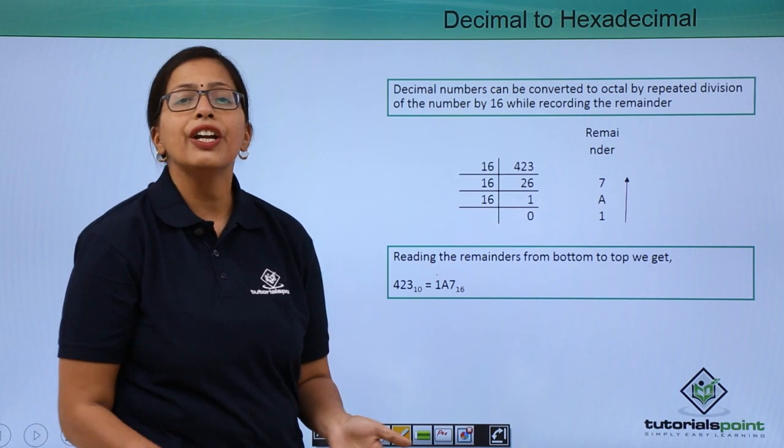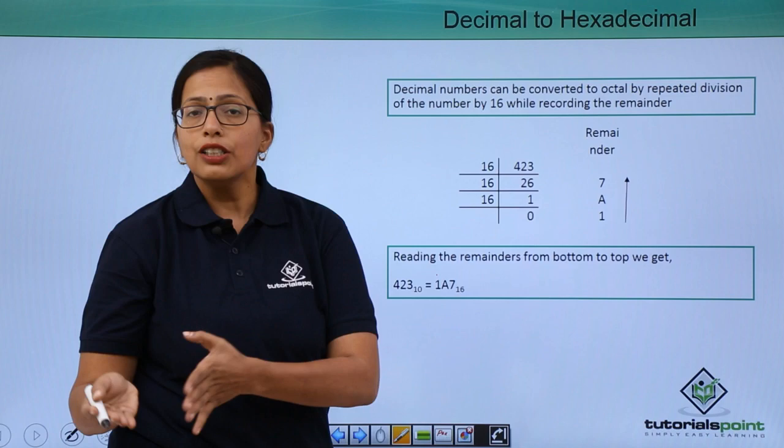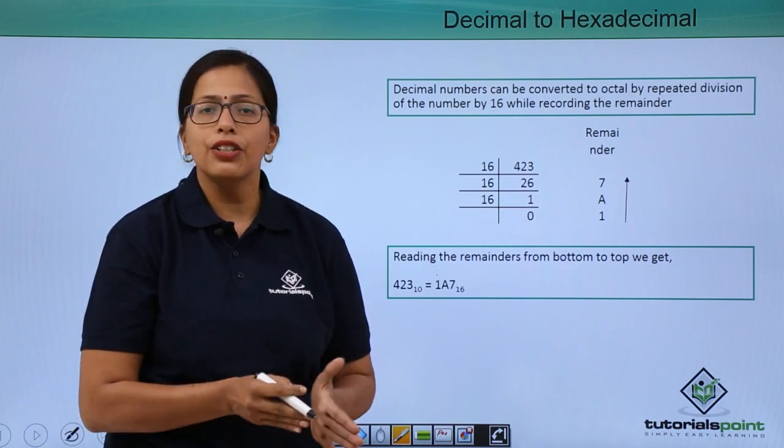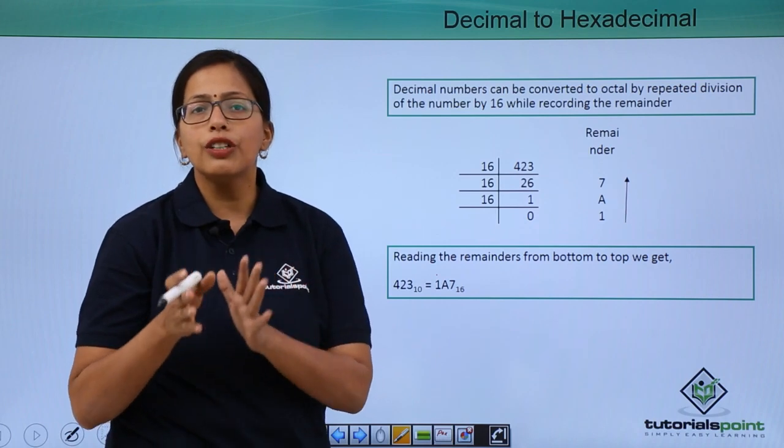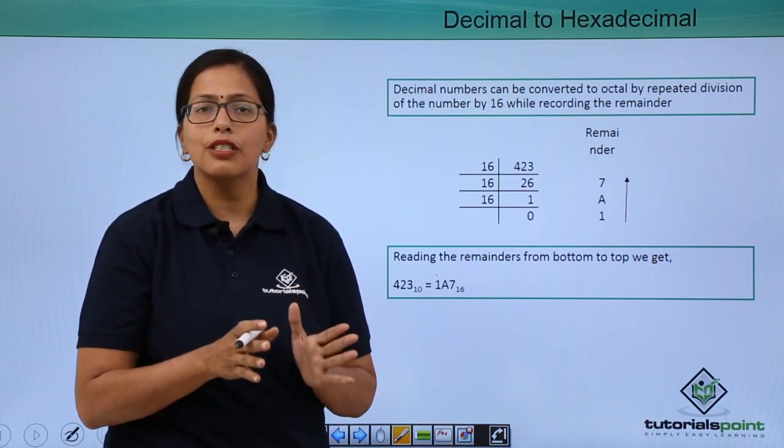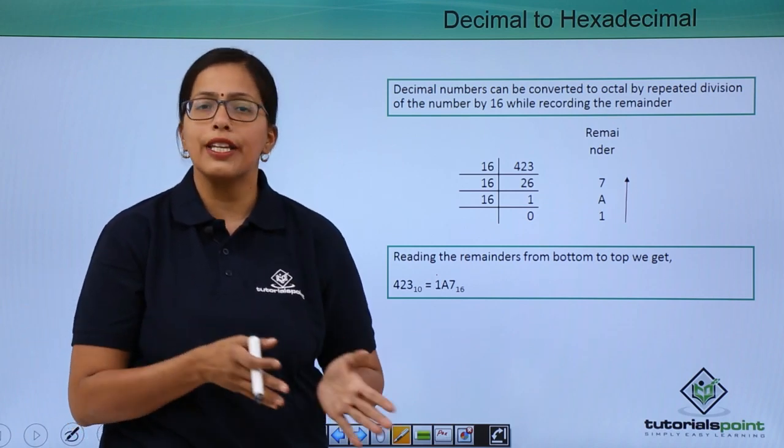So, here we have learned how we can convert decimal number system into the other three number systems that is binary, octal and hexadecimal. In the next video, we are going to see how we can convert the binary number system to the octal or hexadecimal system and vice versa.